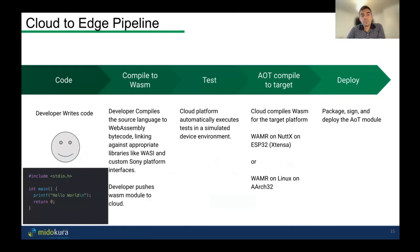What we plan to build is a full automated cloud-to-edge pipeline: the developer writes code, compiles it into WebAssembly, and pushes that compiled module up to our cloud platform. The cloud platform then, based on the target device type, compiles it to the final target — whether that's Xtensa on ESP32, 32-bit ARM, x86, etc. — and deploys to the device. The developer is decoupled from the target.